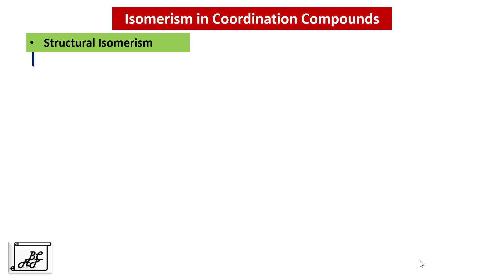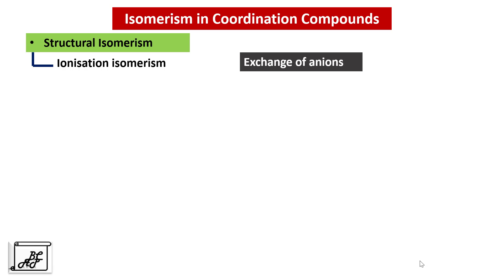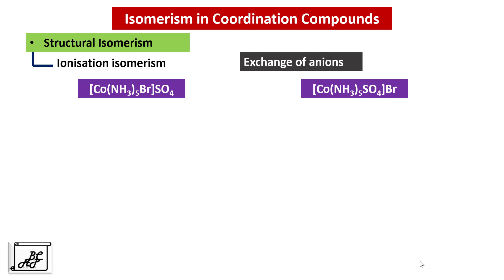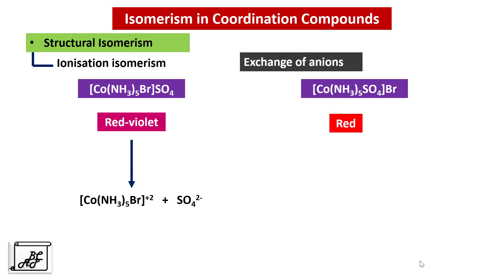Let's move to the second type: Ionization Isomerism. Ionization Isomers differ in exchange of anions. In the first example, the sulphate ion is outside the square bracket, and in the second example, the bromide ion is outside the square bracket. The first complex is reddish violet in color whereas the second has a red color.